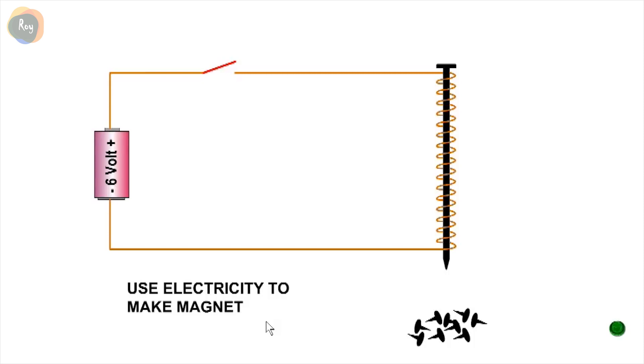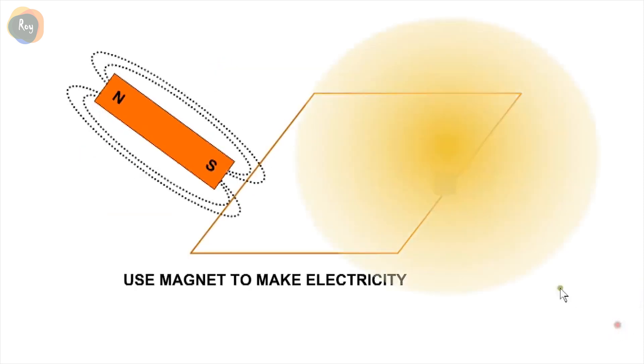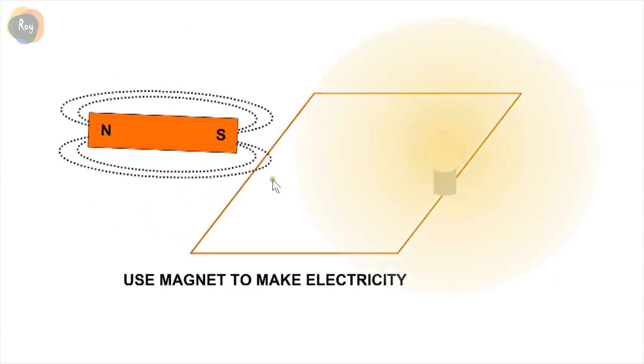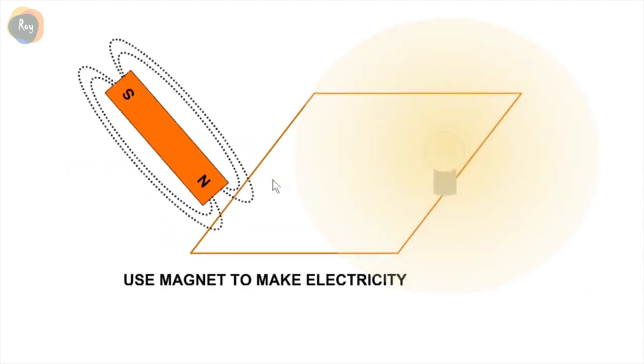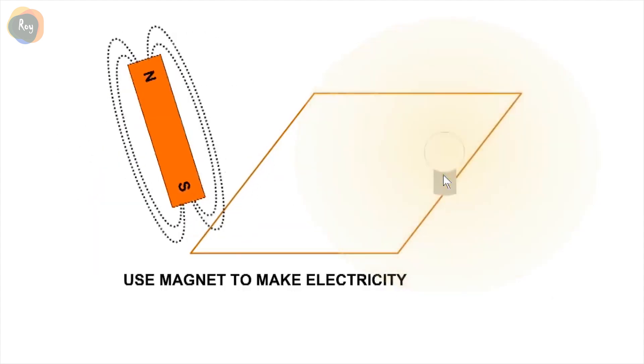There is a close link between electricity and magnetism. Electricity can be used to make a magnet, or a magnet can be used to make electricity. When the magnetic field moves past the conductor, electricity is induced.